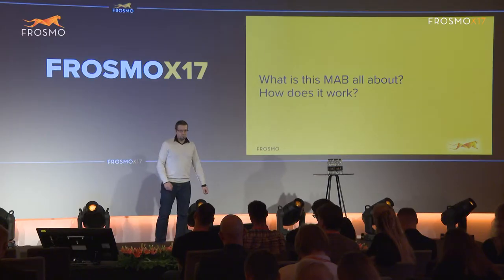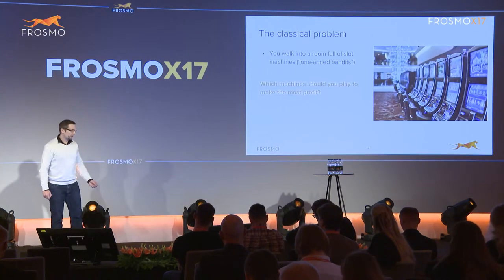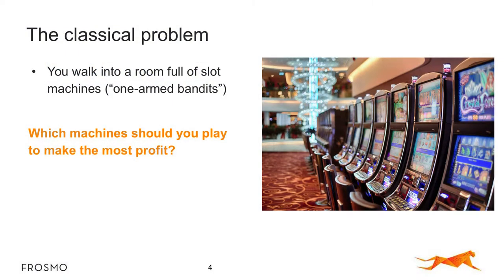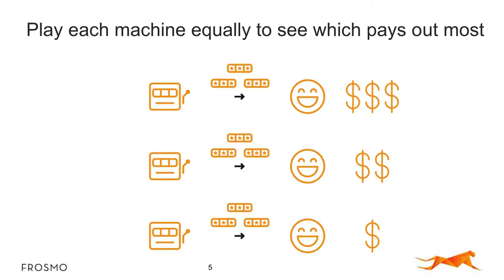So, what is this and how does it work? The classical problem of the multi-armed bandit is that you walk into a room full of slot machines — also known as one-armed bandits — and the question you want to answer is: which machine should you play in order to make the most profit? You might start by playing equally — three times each slot machine — and then see that the first one gives you the most money.